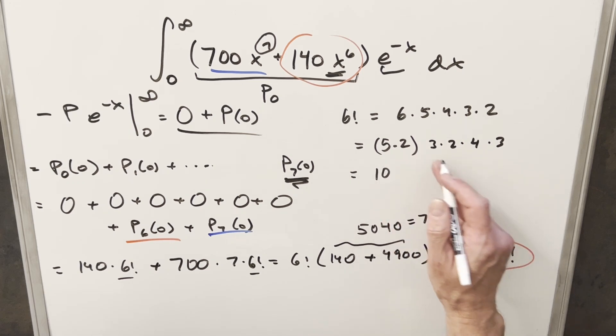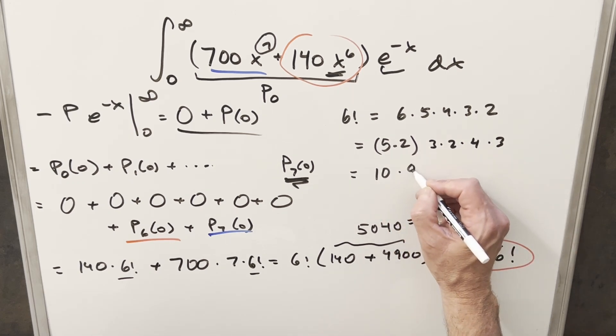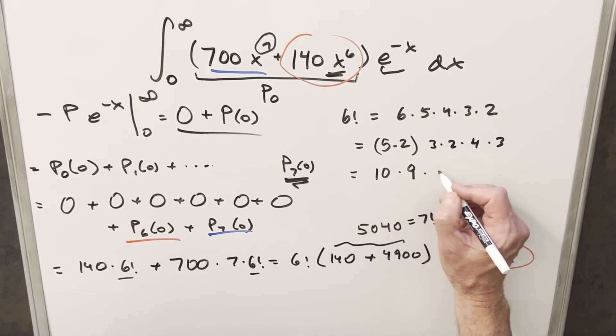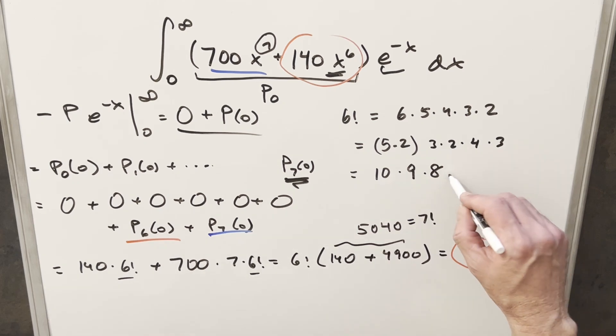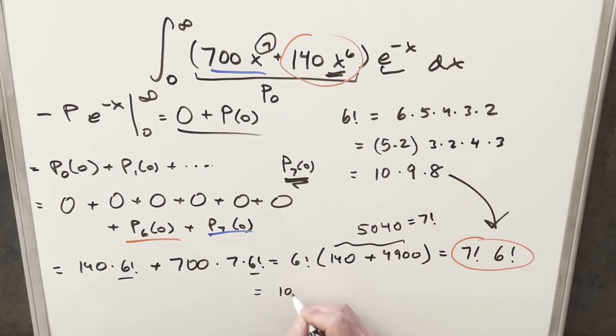3 times 3 is 9. 2 times 4 is 8. So if I take this and put this back in for 6 factorial, what do we have? We've got 10 times 9 times 8 times 7 factorial.